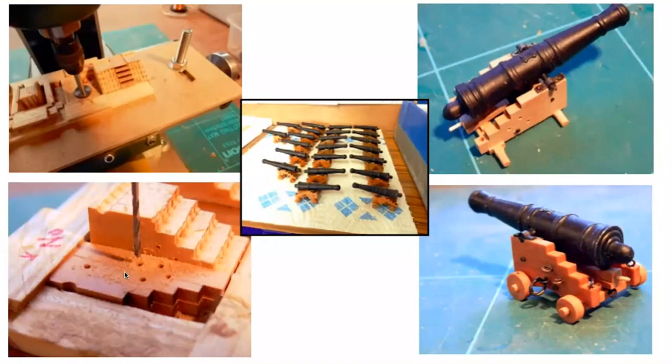Top right, some of the ironwork. The axles and the coins have yet to be added. Once the wheels were added, the carriage was tongue oiled and left to dry. That's a complete gun there with its carriage. And the center picture I just put in because it shows my production line in action.